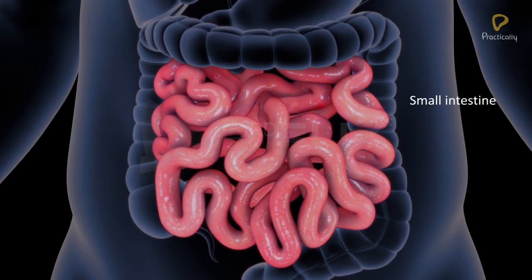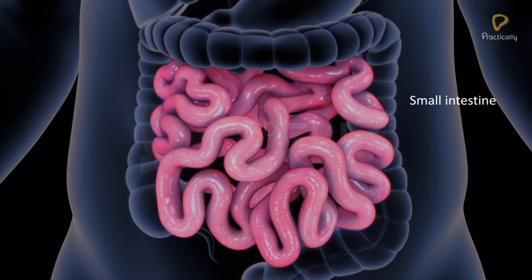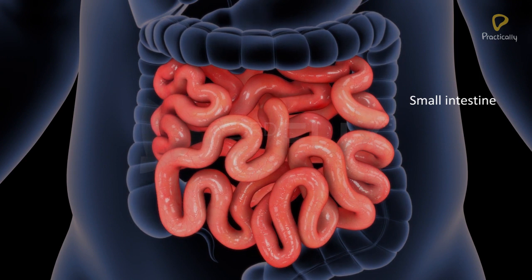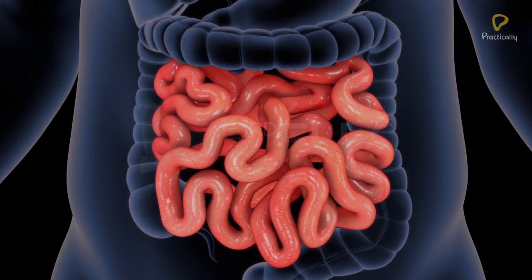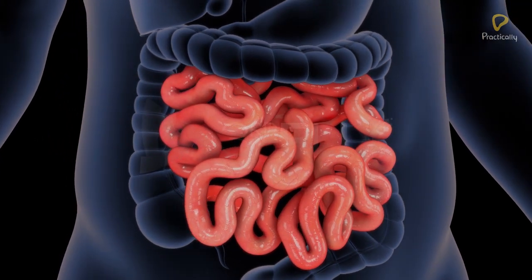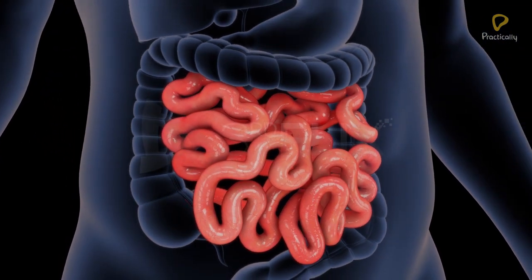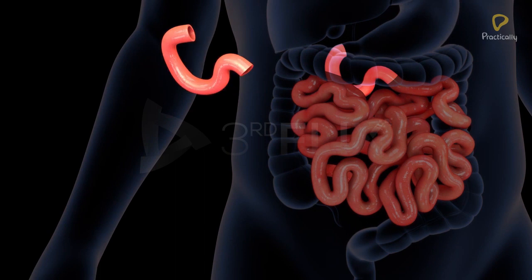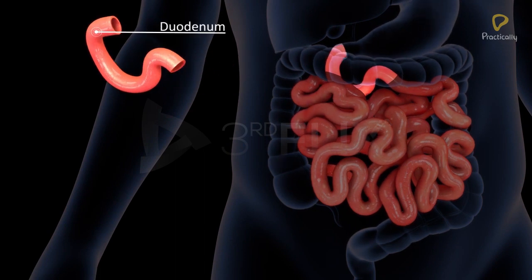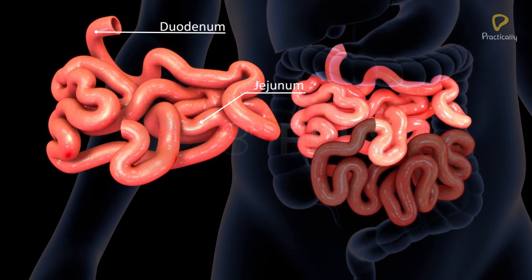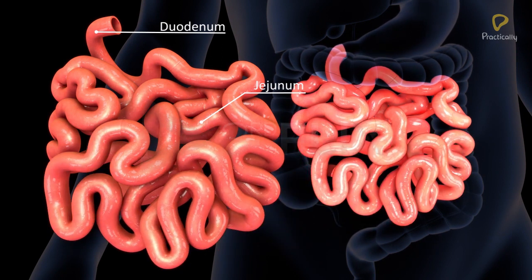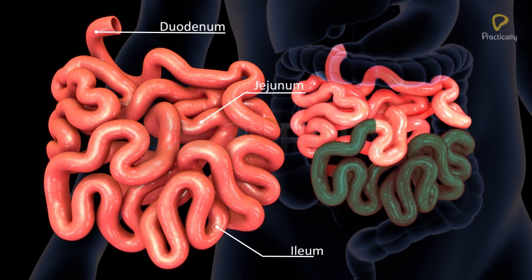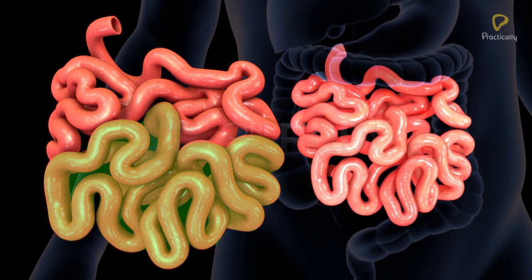The small intestine is the longest part of the human alimentary canal. It is distinguishable into three regions: a C-shaped duodenum, a long coiled middle portion called the jejunum, and a highly coiled ileum, which is the longest part of the small intestine.